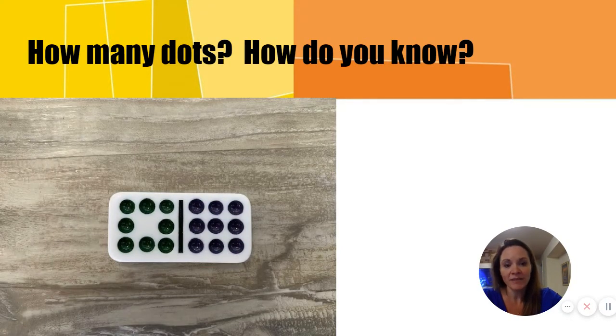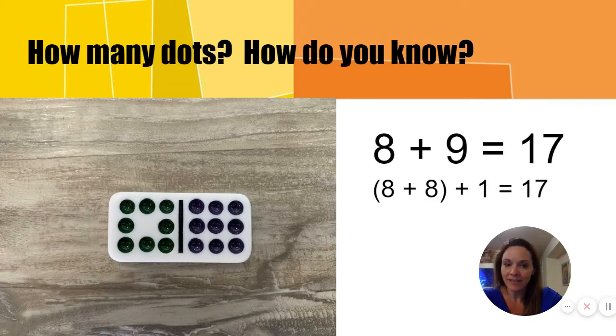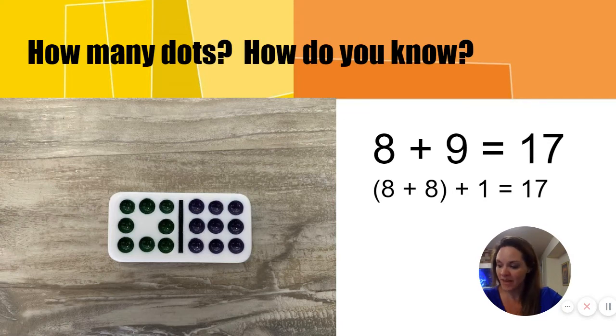What changed in this image? We see one more dot than we did in the previous image. If we know eight and eight is sixteen, eight plus eight and one more makes seventeen. Eight plus nine equals seventeen.